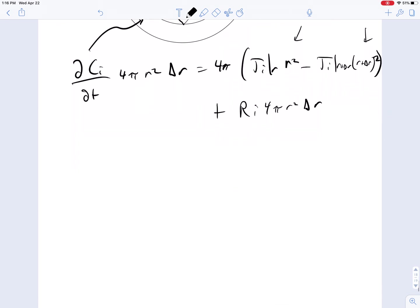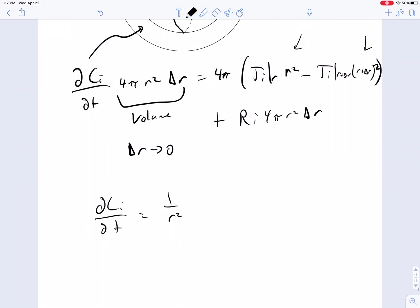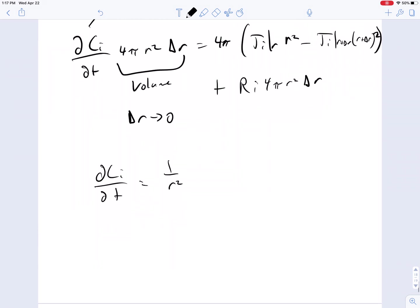So what do we do? We divide through by the volume, take delta r goes to zero, and this whole equation collapses down into the following: partial Ci/partial t equals 1 over r squared. Of course, the minus, this becomes minus 1 minus this term here.